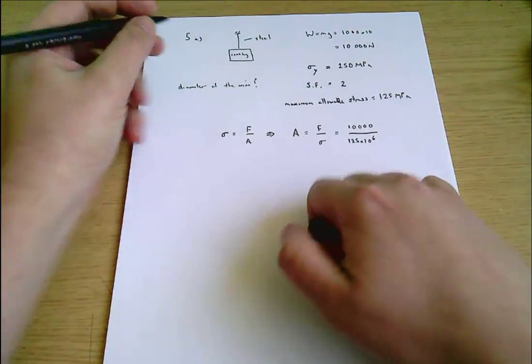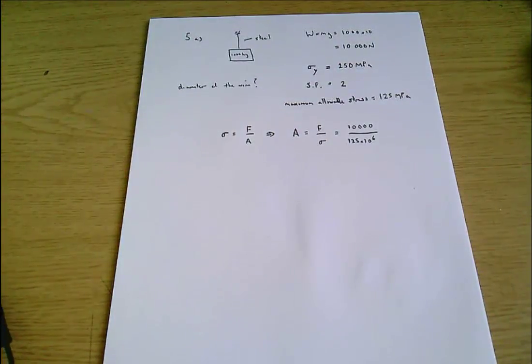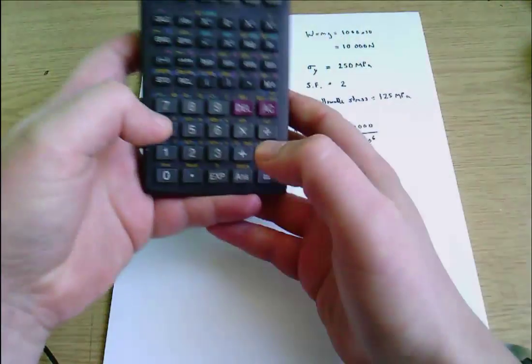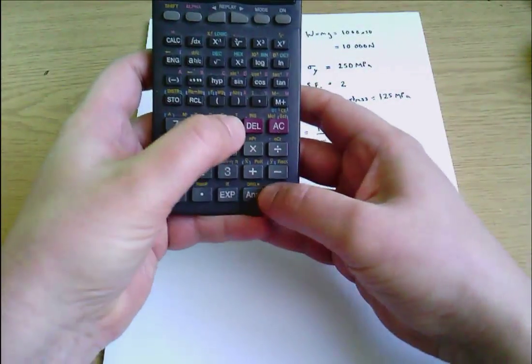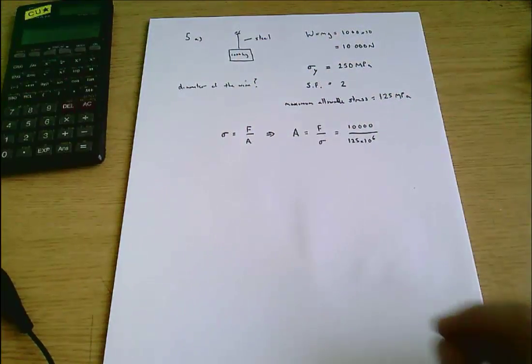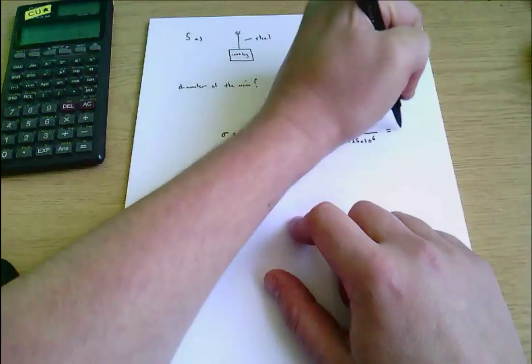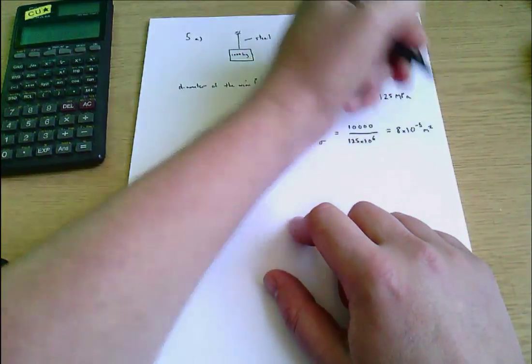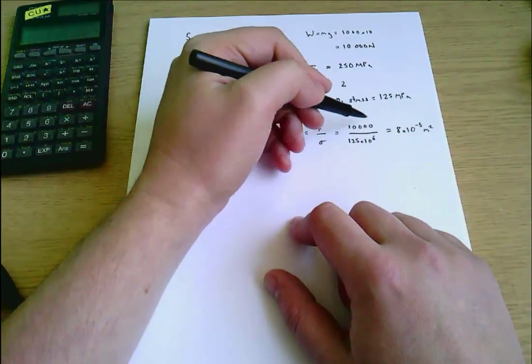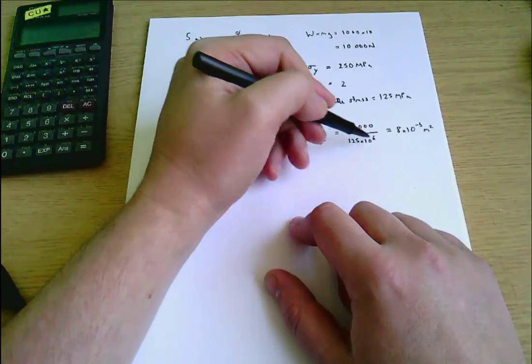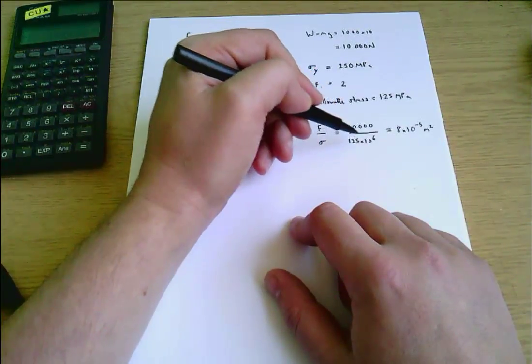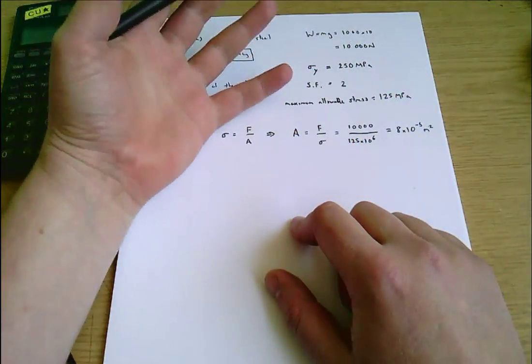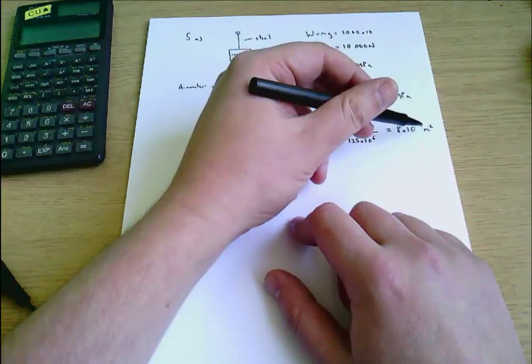Okay and now I can put that into my calculator. 10,000 divided by 125 times 10 to the 6 is 8 times 10 to the minus 5. Because this unit was in newtons and this unit was in pascals, we've used SI equivalents or SI derived units throughout, so this is going to be in square meters.